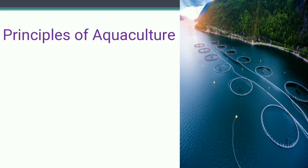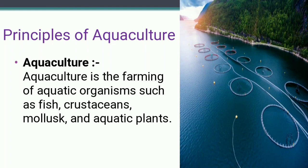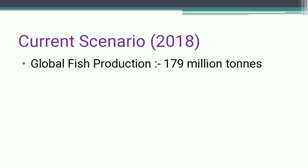Starting with Principles of Aquaculture: Aquaculture is the farming of aquatic organisms such as fish, crustaceans, mollusks, and aquatic plants. Current scenario as of 2018: global fish production was 179 million tons.